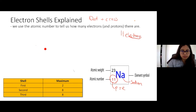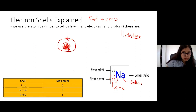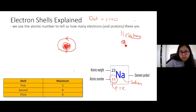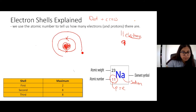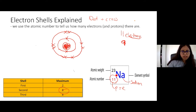Next, we draw the nucleus, which contains the protons and neutrons. Using our rule, the first shell — closest to the nucleus — can hold a maximum of two electrons, so we place one and two. We still have nine more electrons to go, so we open up the second shell, which holds a maximum of eight. We fill it with eight electrons.